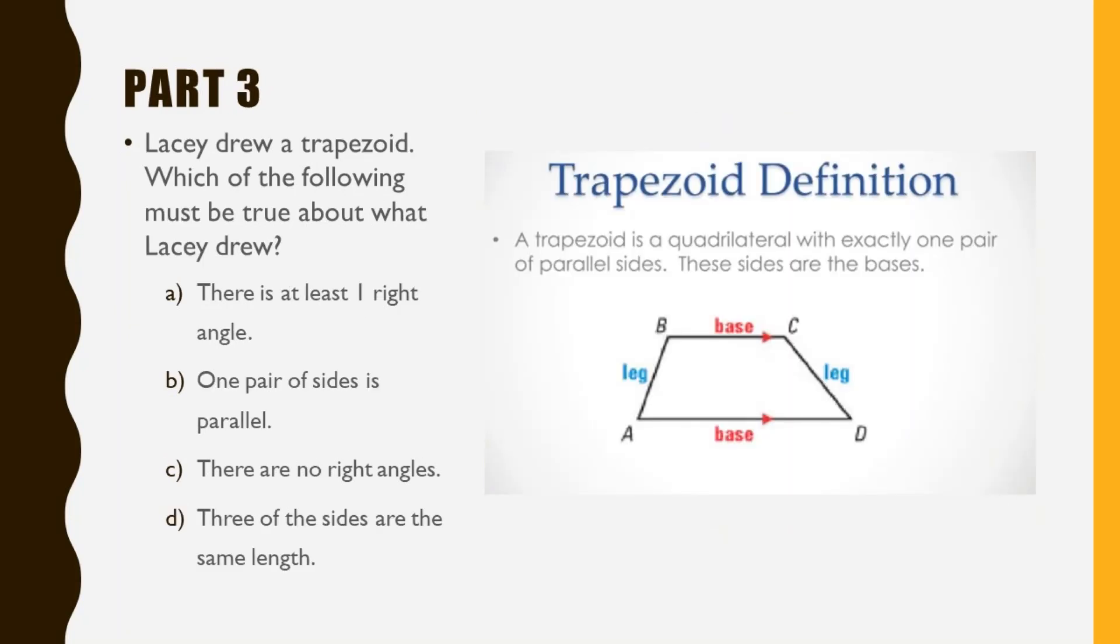Lastly, let's review part 3. Lacy drew a trapezoid. A trapezoid is a quadrilateral with exactly one pair of parallel sides. So which of the following must be true about what Lacy drew?